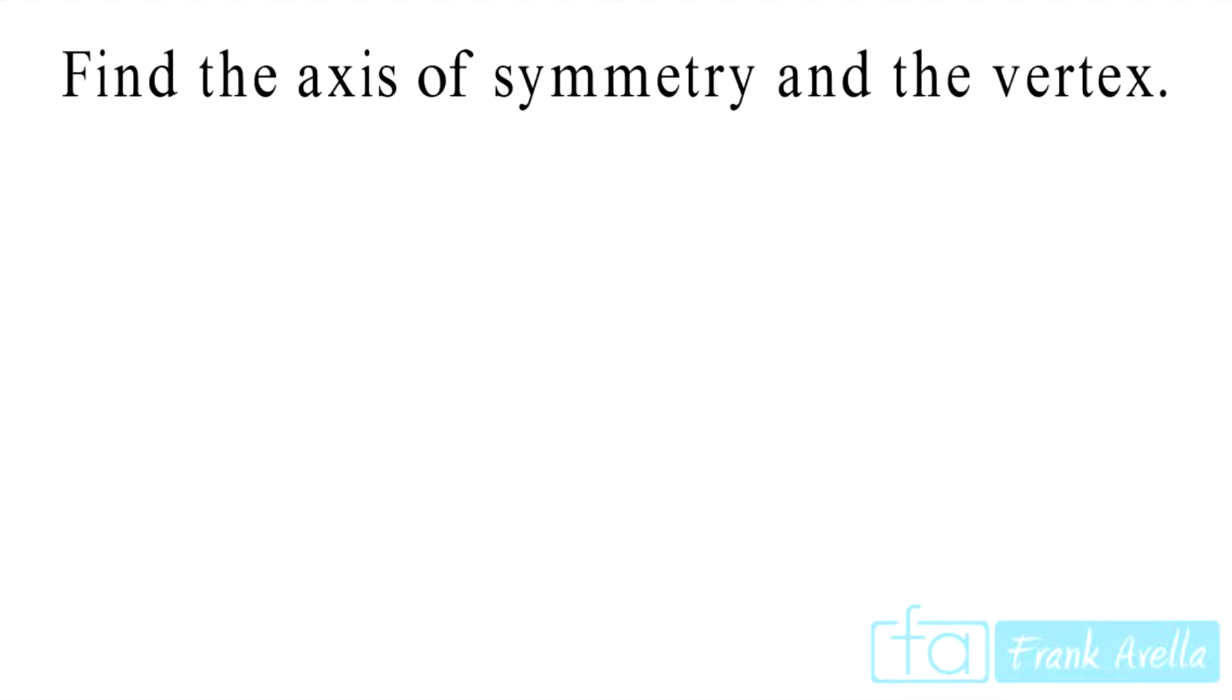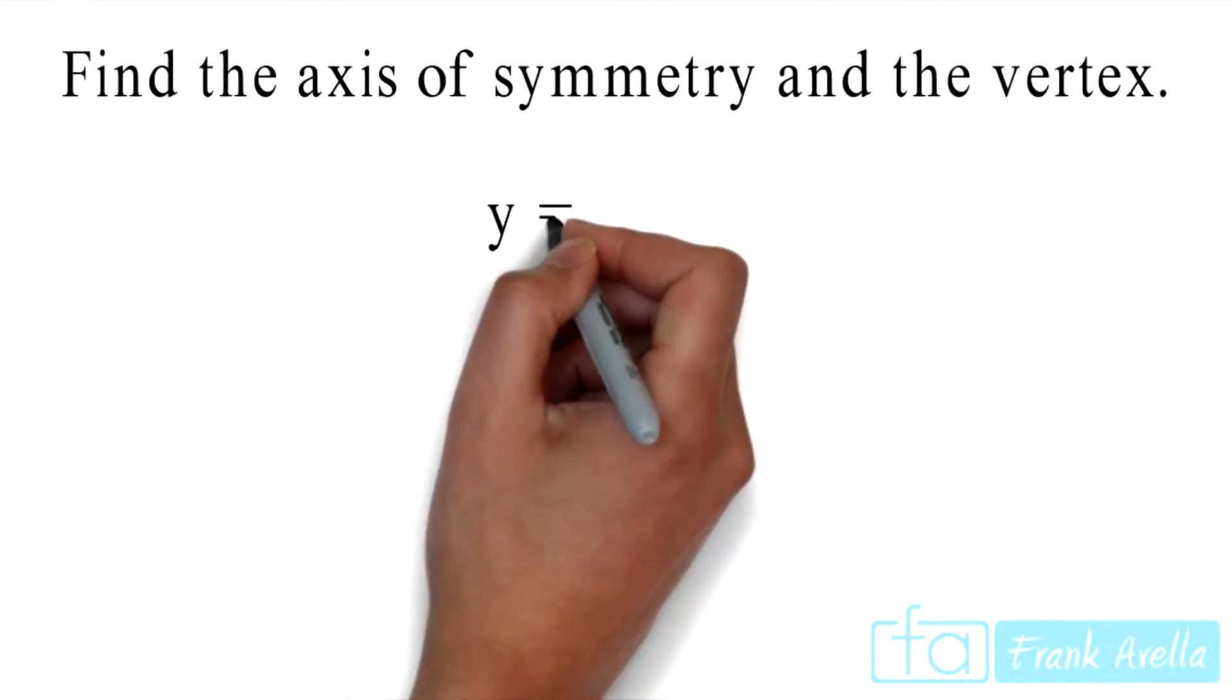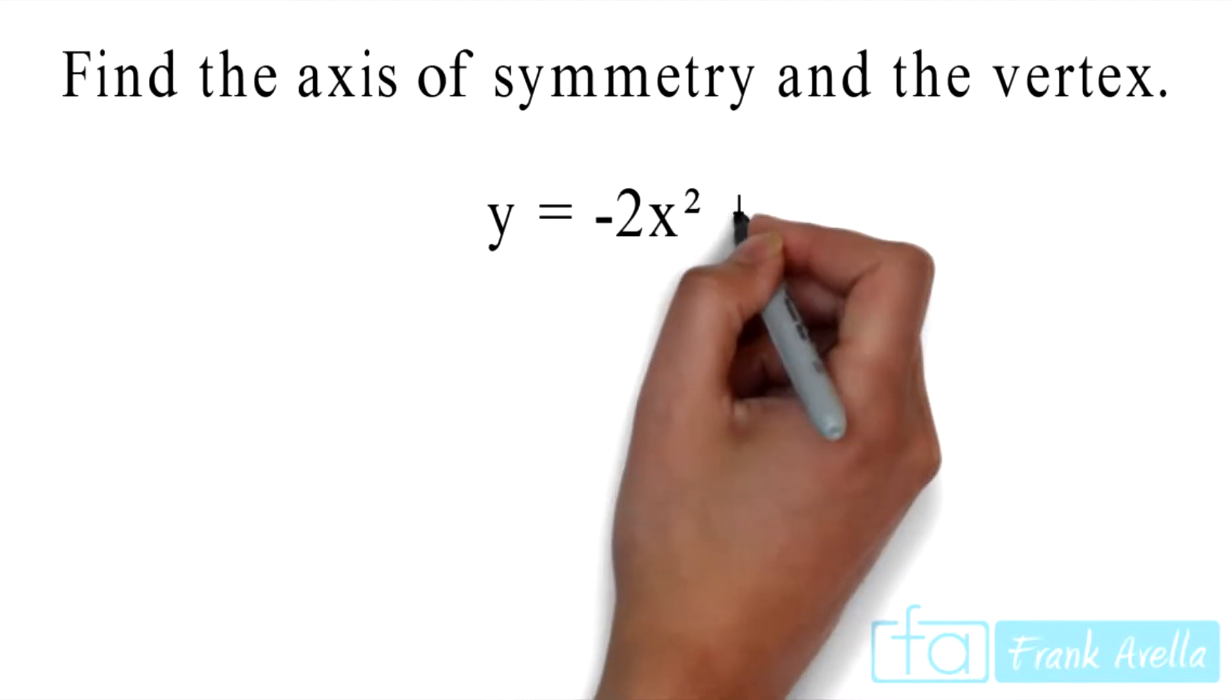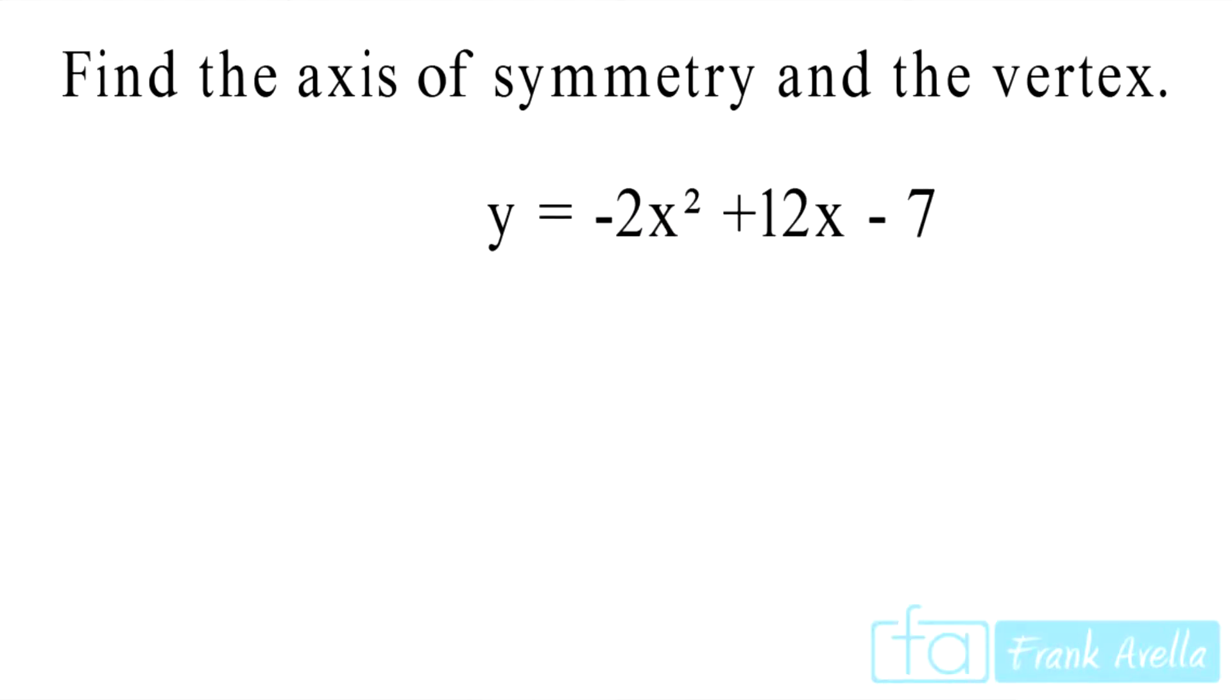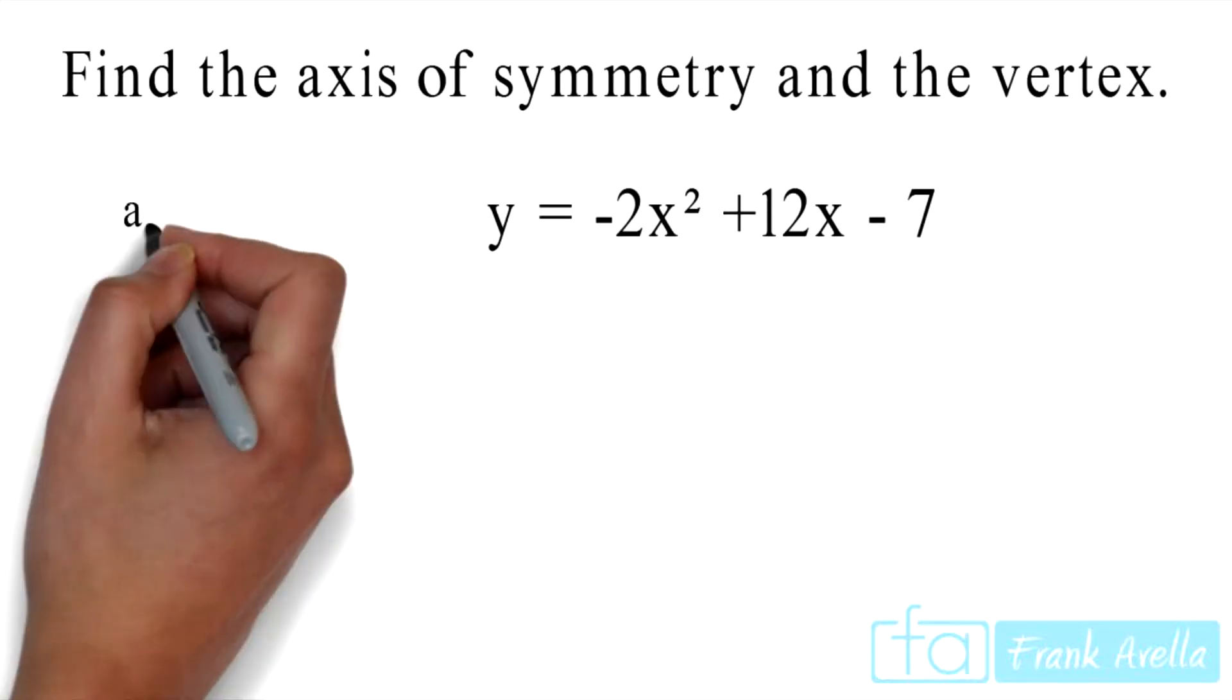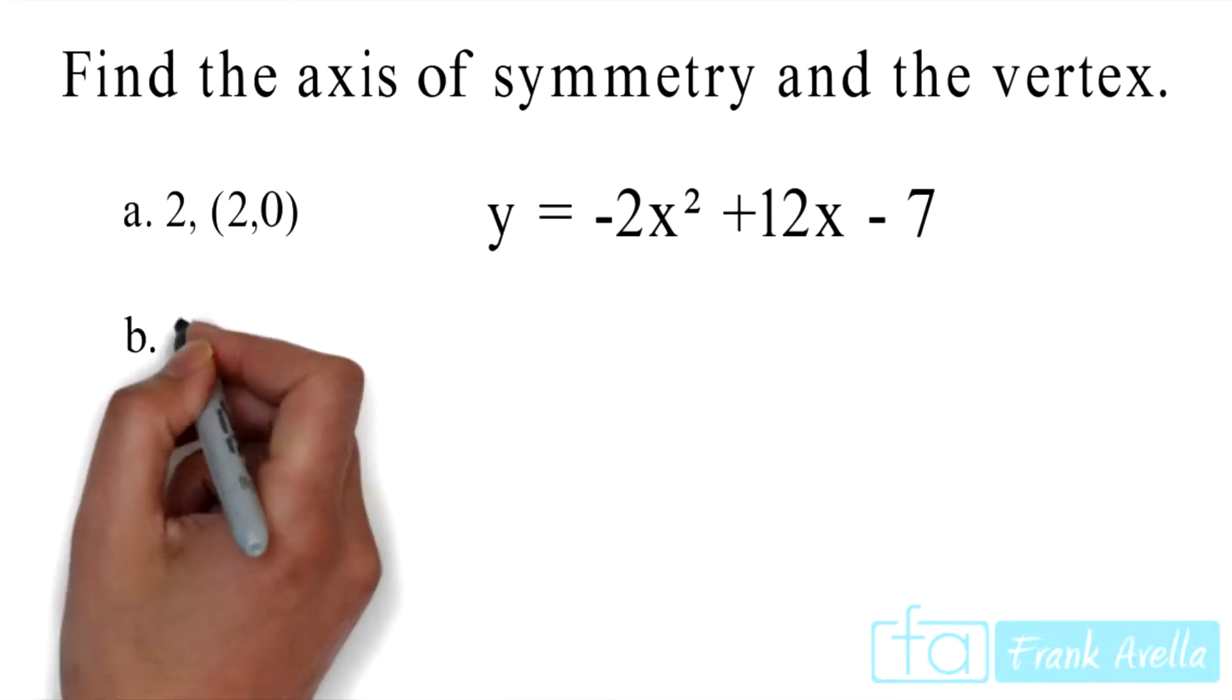Find the axis of symmetry and the vertex. You're given the function y equals negative 2x squared plus 12x minus 7, and you're given the following choices.